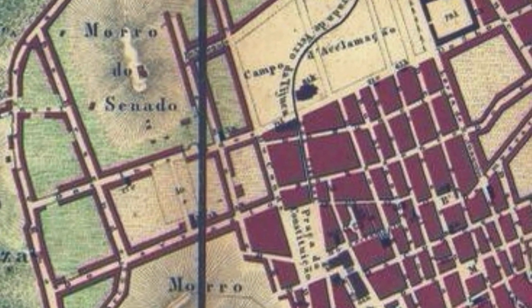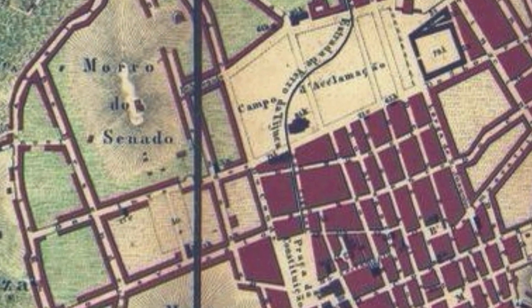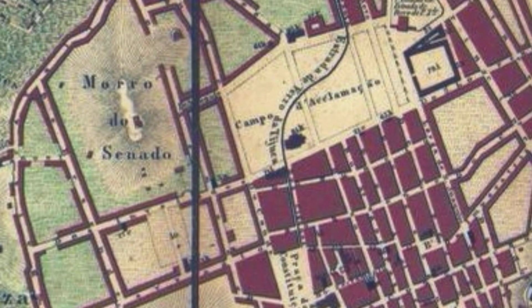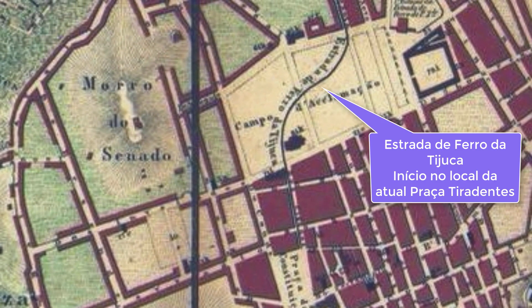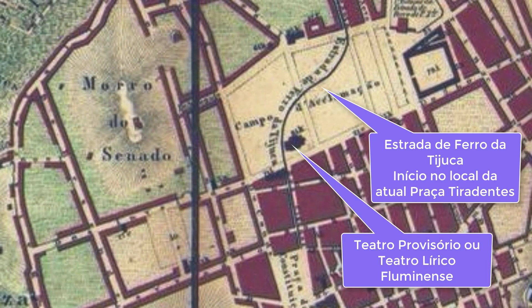This line going from the Praça da Constituição — the current Praça Tiradentes — passing by the Campo of Santana, would represent the first tram line (Bondes) of Rio de Janeiro.